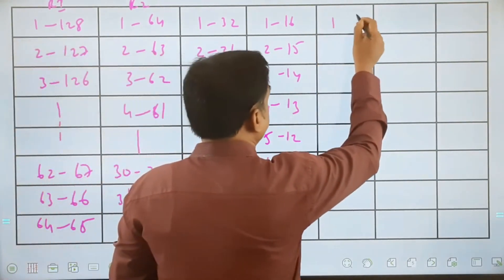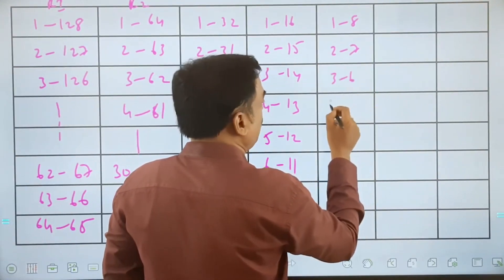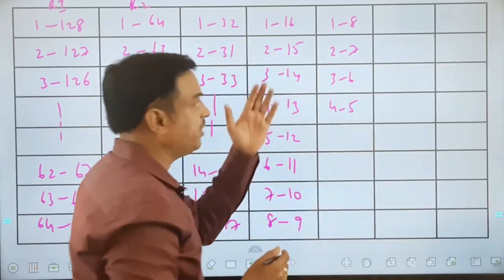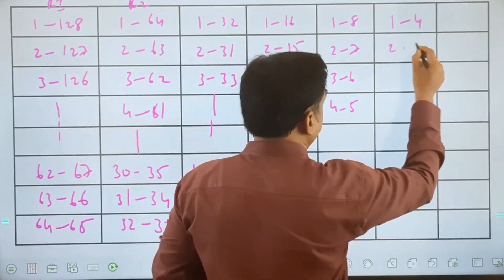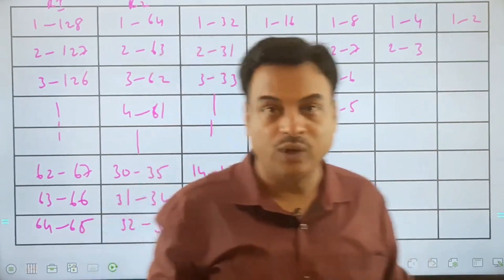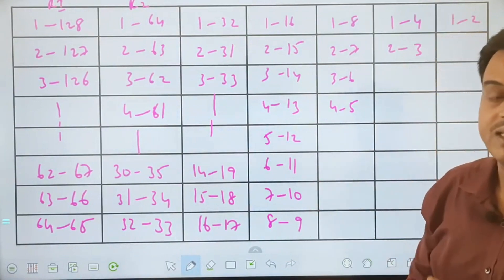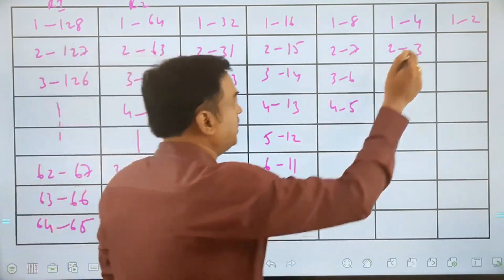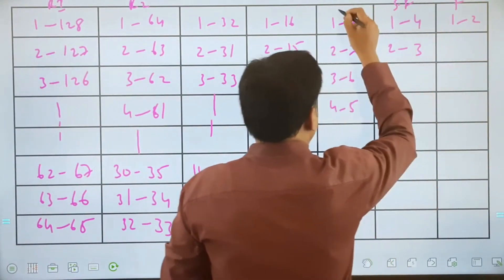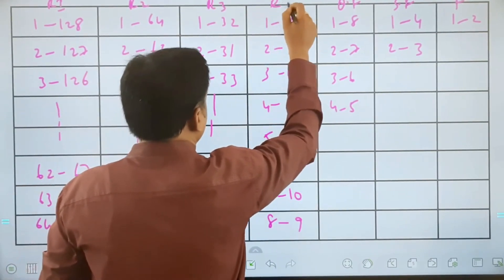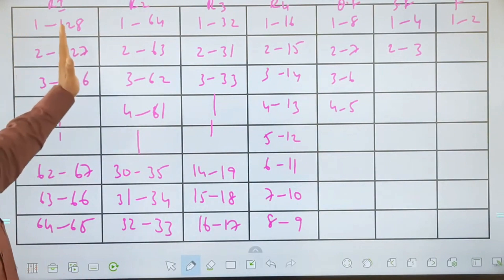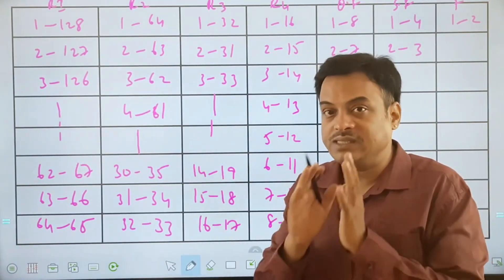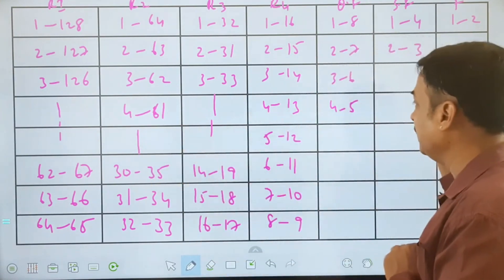If the best player wins each time: player 1 plays against 8, player 2 against 7, player 3 against 6, player 4 against 5. Then 1 plays against 4, and 2 plays against 3. Finally, it's 1 versus 2, and player 1 wins the tournament. Because of 128 players, this system takes 7 rounds to complete the tournament. This entire arrangement assumes the best player always wins.